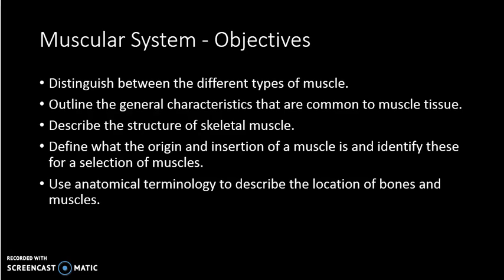Hello and thanks for tuning in to the third lecture of the year. Having looked at the skeletal system in our previous two lectures, we move on now to the muscular system. The objectives are to distinguish between the different types of muscle, outline the general characteristics common to muscle tissue, describe the structure of skeletal muscle, define the origin and insertion of a muscle and identify these for a selection of muscles, and use anatomical terminology to describe the location of bones and muscles.